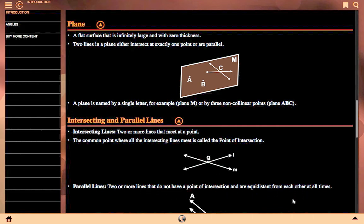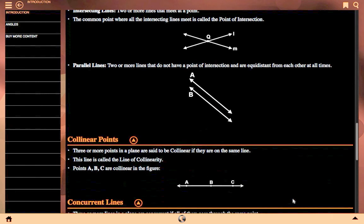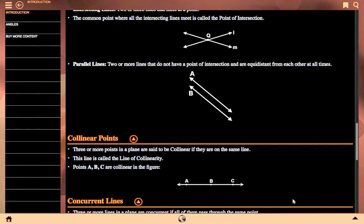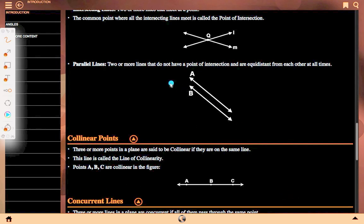Parallel lines: Two or more lines that do not have a point of intersection and are equidistant from each other at all times. Here A and B are parallel lines. They are equidistant from each other at every point.